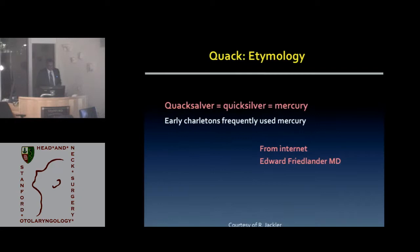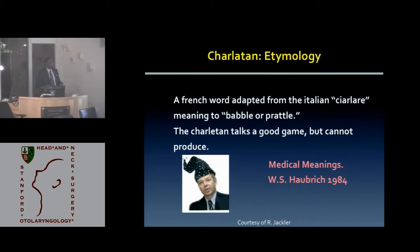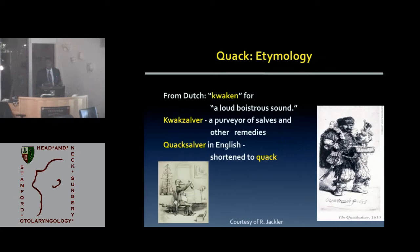When looking at where does the word 'quack' originate from, it originates from a Dutch word. During the Renaissance period, mercury was held as a cure for syphilis and then later for everything else. 'Quacksalver' originated from 'quicksilver' and mercury, which they used often during that time. 'Charlatan' is another word used to describe quacks — someone who talks a good game but can't really produce. The word was eventually shortened to 'quack' in English.